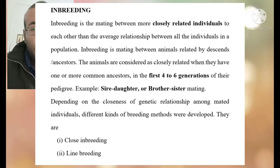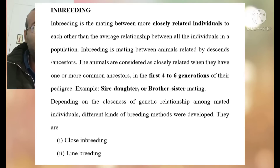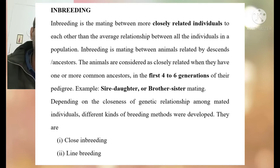Depending on the closeness of the related individuals, inbreeding can be divided into two parts: first is close inbreeding, and the second is line breeding. Close inbreeding is the mating of more closely related individuals, like parent-offspring mating, full-sib mating, and half-sib mating.